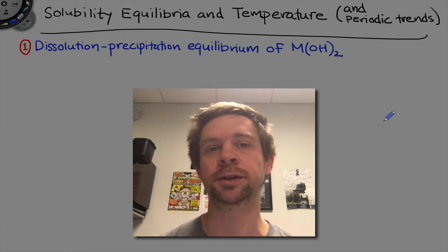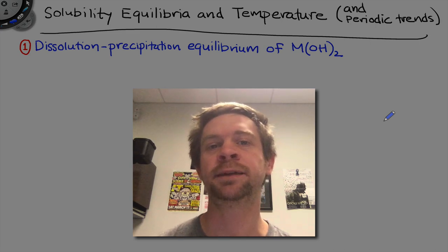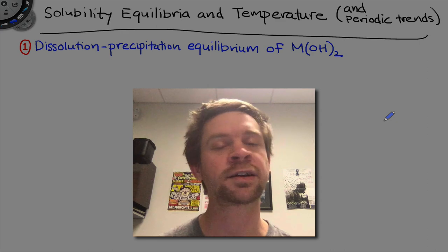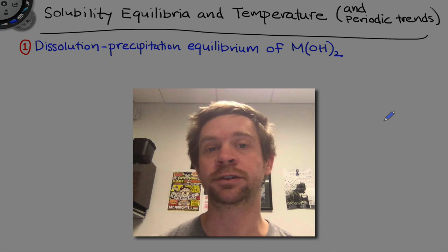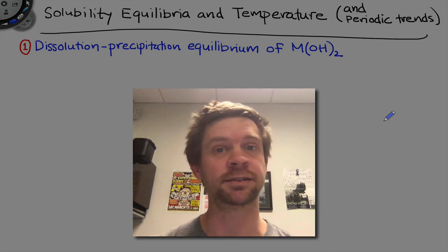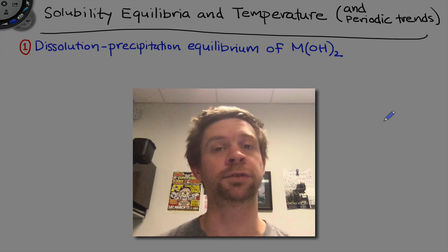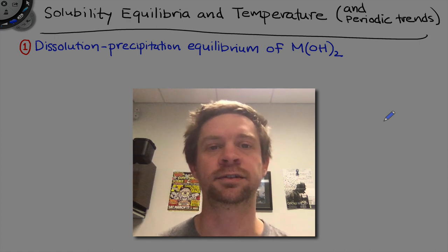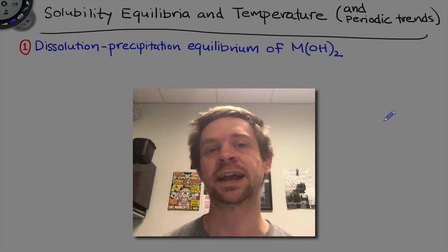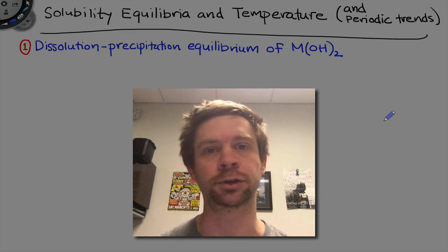The overarching goal of the experiment is to measure the solubility product constant, or KSP, for a series of group 2 metal hydroxides dissolving in water — specifically magnesium, calcium, and strontium hydroxides. You and your lab partner will investigate only one of the three, and then pool your data with the rest of your section to get the periodic trends, to see whether there is a periodic trend in KSP at a given temperature for a series of metal hydroxides with the metal in group 2.